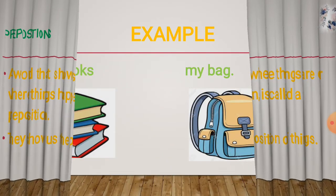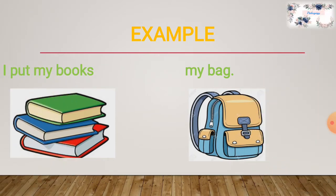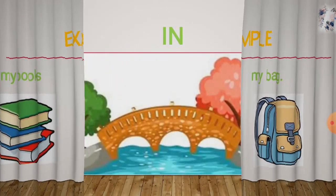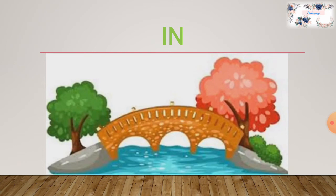Now we are going to see a simplest example to make you understand this topic. You can see two objects in this picture: books and bag. The statement is: I put my books in my bag. In this sentence, if I am going to remove the preposition 'in', the sentence becomes: I put the books my bag. By this sentence, we don't know the location of the books — whether they are in the bag or on the bag. Nothing is cleared by that sentence.